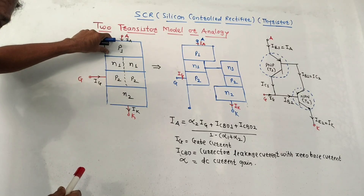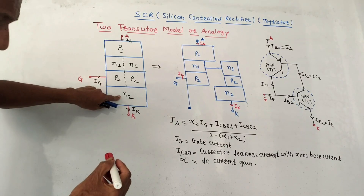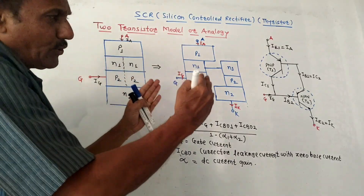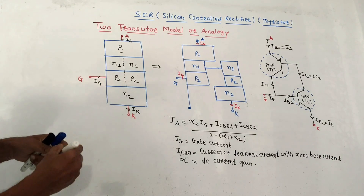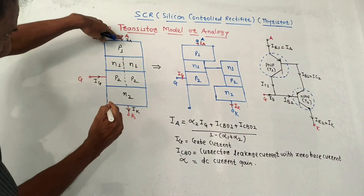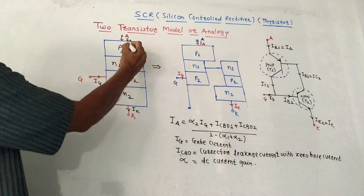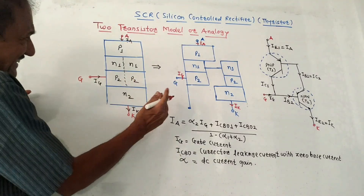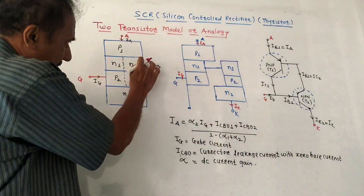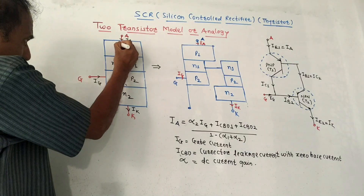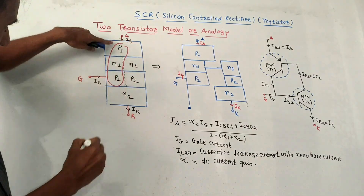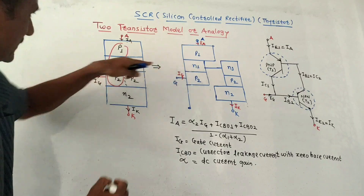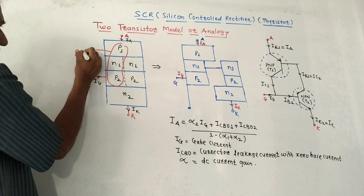P1 is the first layer and N2 is the last N-layer. The second and third layers are divided into two parts: N1 and P2. The remaining terminals are the same — anode, gate, and cathode — with corresponding currents IA (anode current), IK (cathode current), and IG (gate current). Considering layers P1, N1, and P2 together, this acts as one PNP transistor.